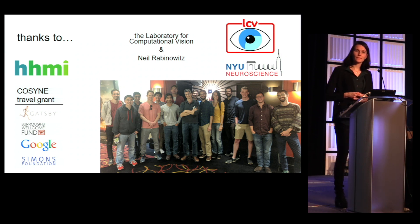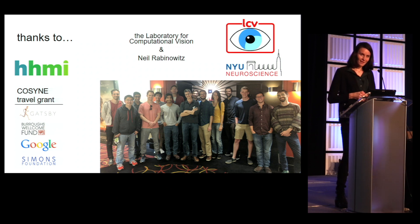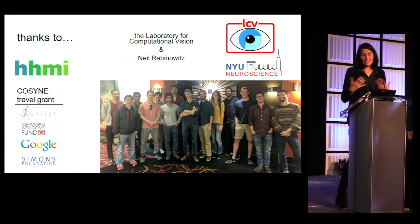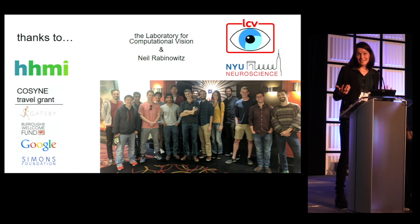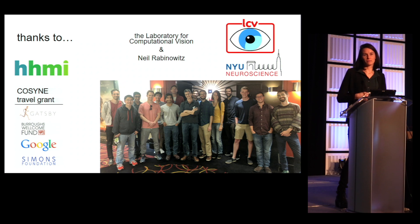Question: Is it fair to say you've replaced the problem of the decoder learning which neurons are informative with the modulator now having to learn which neurons are informative — and why would that be easier for the modulator? Response: That's correct — there is still the big question of where the modulation has this information in the first place. We do not know that exactly; we just know we can extract it from the data, and that was our starting point. It will definitely be important to think about how this modulation comes about and why it has this labeling function.